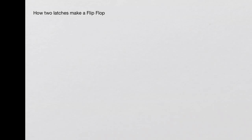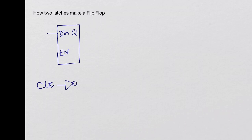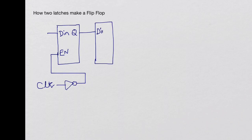Welcome to EE Know-How. In this video I would like to explain how two latches in series make a flip-flop. Let's look at this circuit where we have two latches: an enable, a DN input, and a Q output for each latch. We invert the clock and feed it as an enable for the first latch, then we have a second latch whose DN is connected to the Q of the first latch. The Q of the second latch is the output, and for the second latch we directly connect the clock as the enable.